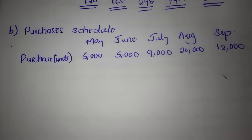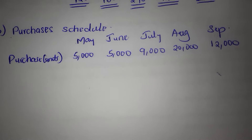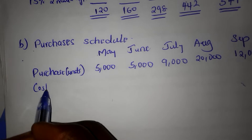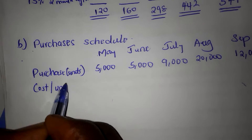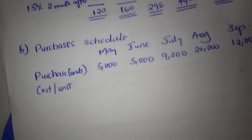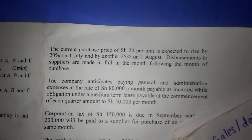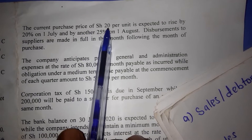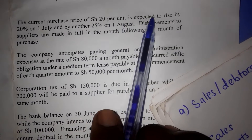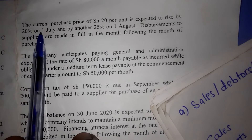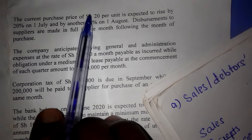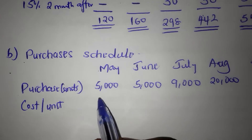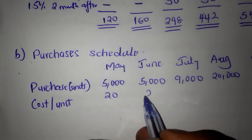Next we need to check the cost per unit. From additional information number two, the current purchase price is 20 shillings per unit. So in May and June, the price will be 20 shillings per unit.